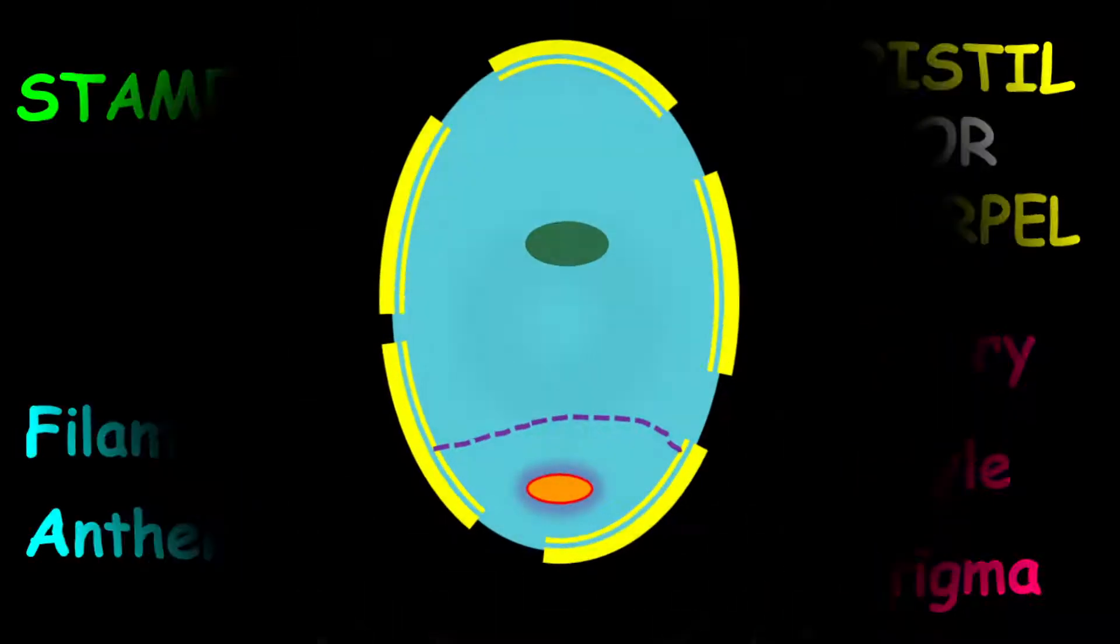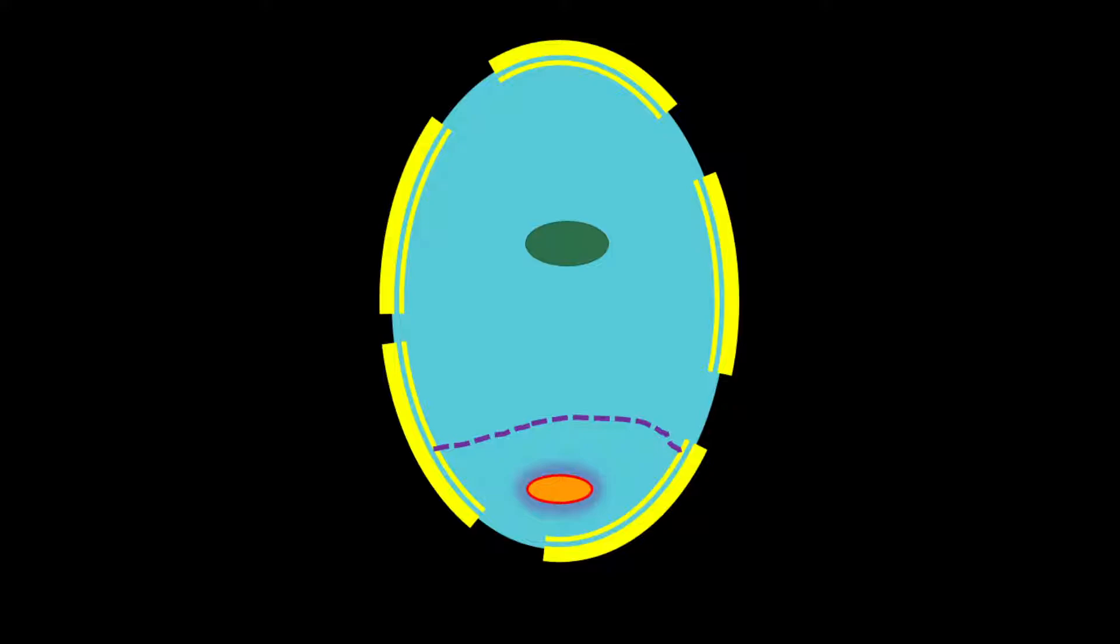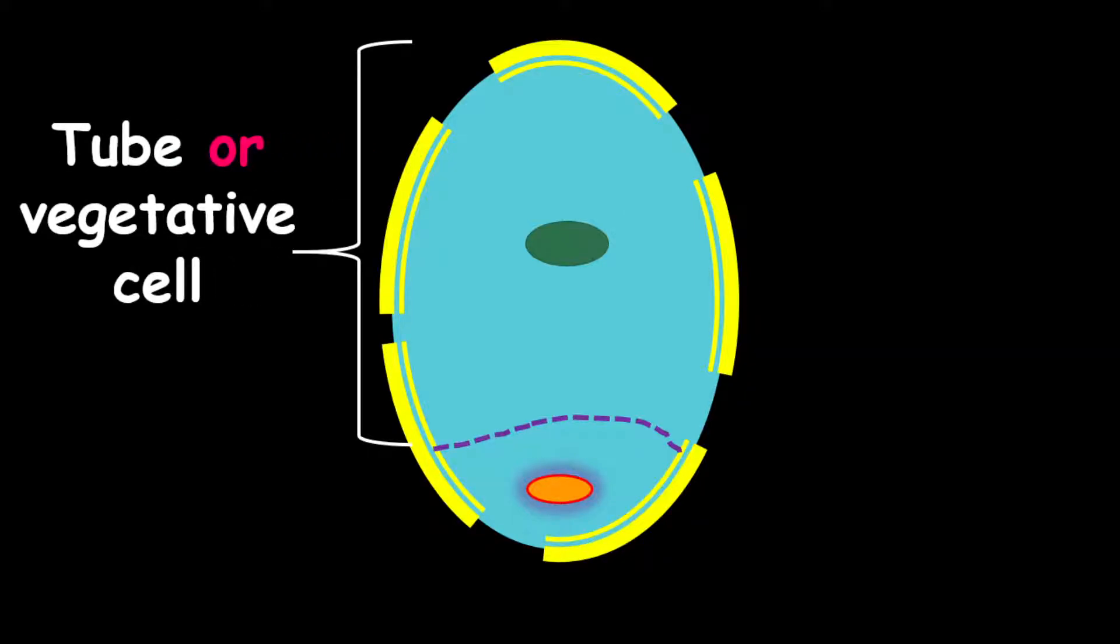Now let's look at the pollen grain. The pollen grain is made up of two cells. One cell, which is called the tube or the vegetative cell, and we also have another cell, which is called the generative cell.